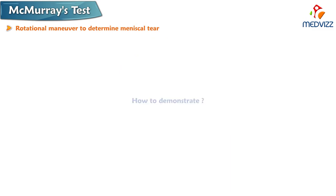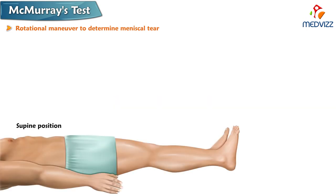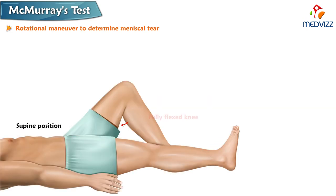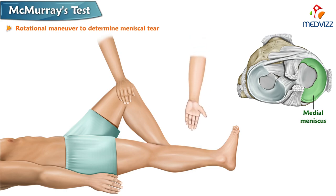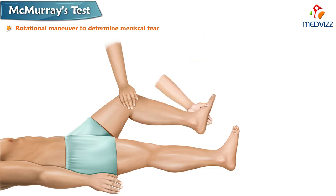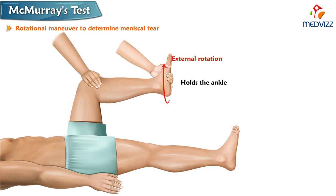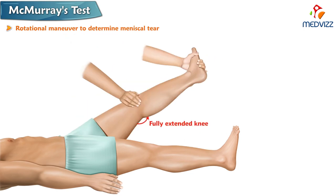Now let us talk about how we can demonstrate this particular test. The test begins with the patient lying supine with a fully flexed knee. The medial meniscus is palpated with one hand on the joint while the other hand holds the ankle and performs external rotation, repeated a couple of times.